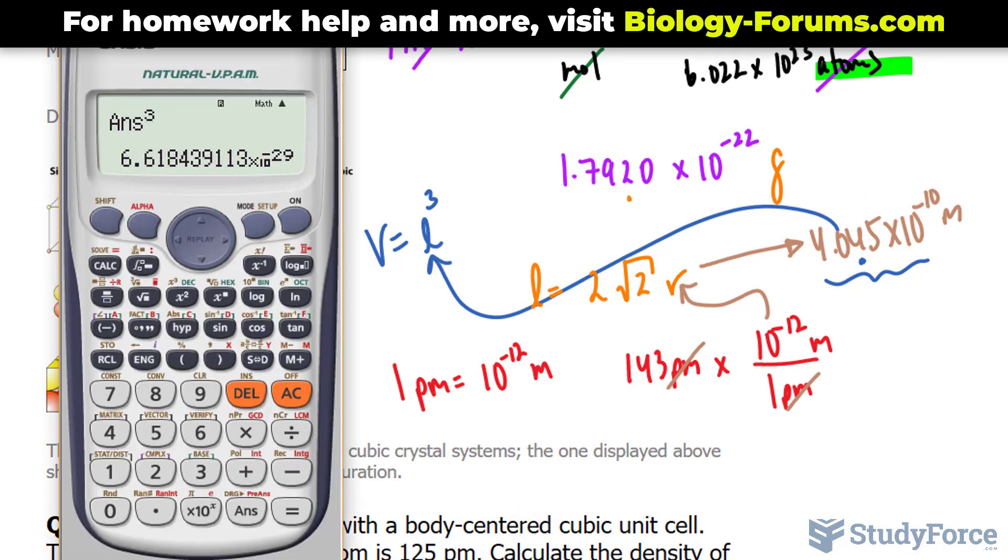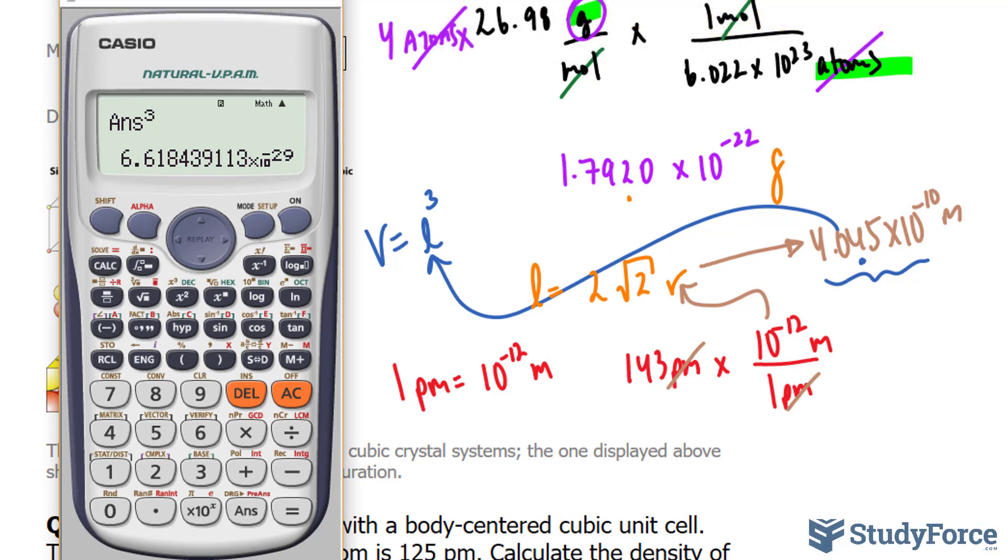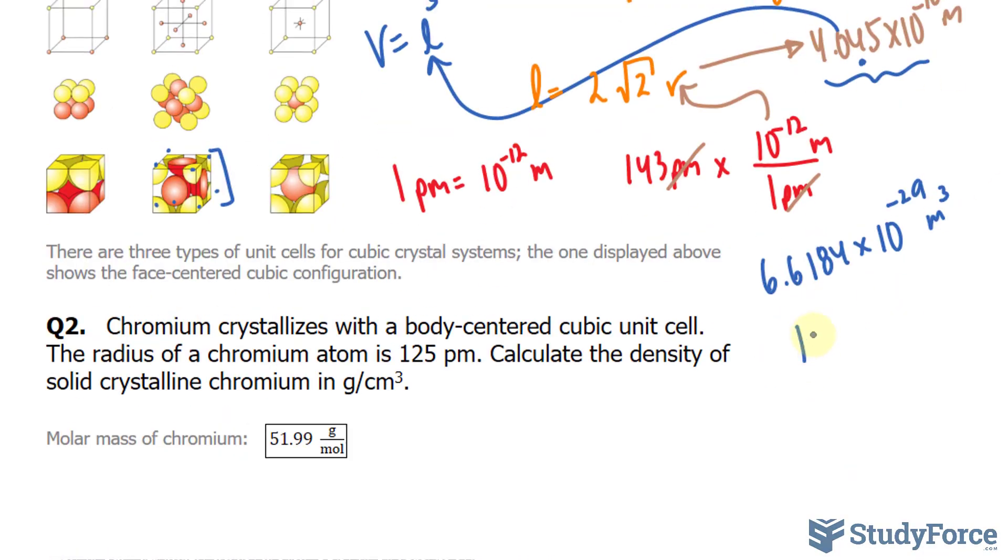So now we have our volume, and remember our volume is going to be this number with the units meters cubed. Also remember that 100 centimeters is equivalent to 1 meter. If I cube both of these, I now have the conversion factor, which I can use to make this into centimeters cubed.